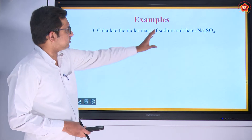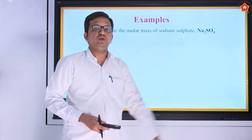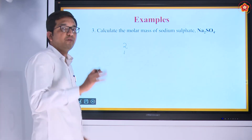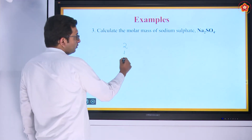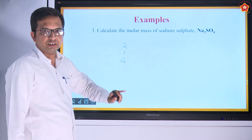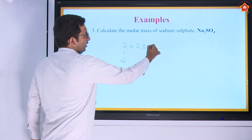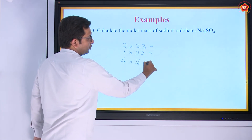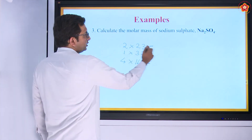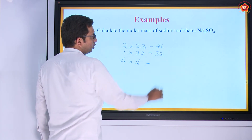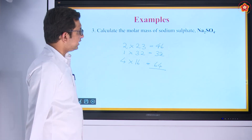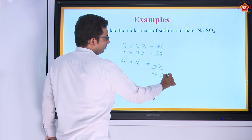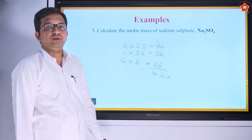Third example: sodium sulfate (Na2SO4). Sodium: 2 atoms; sulfur: 1 atom; oxygen: 4 atoms. From the periodic table, mass of sodium = 23 U, mass of sulfur = 32 U, mass of oxygen = 16 U. Calculation: 23 × 2 = 46; 32 × 1 = 32; 16 × 4 = 64. Total mass of sodium sulfate = 46 + 32 + 64 = 142 U.